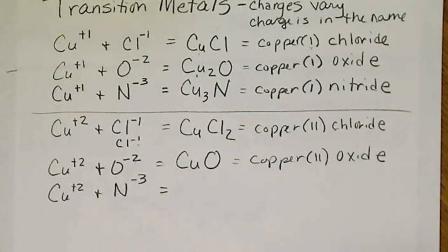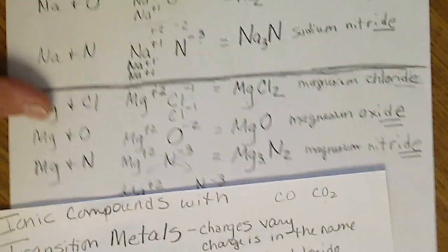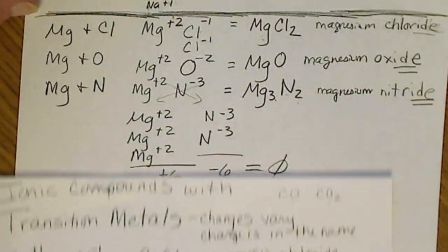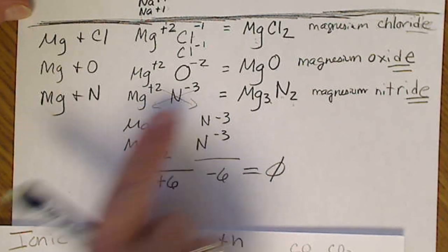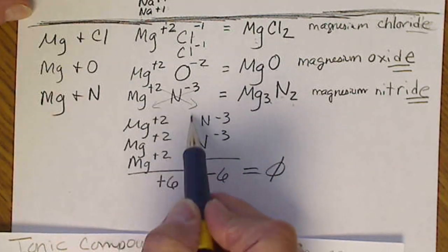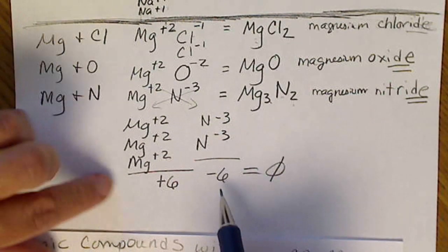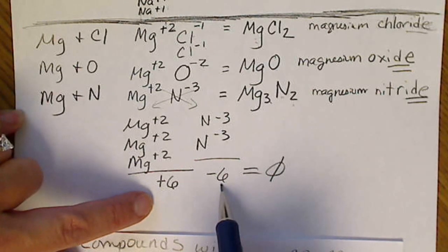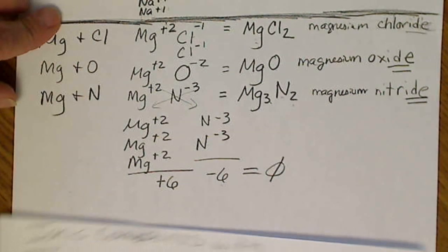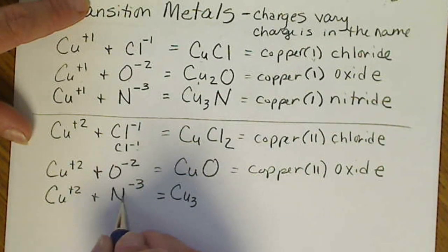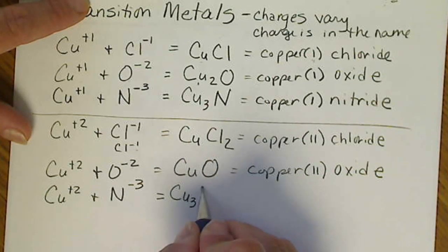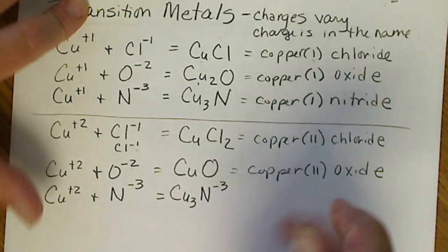And this one is going to be just like the previous slide where we had a magnesium plus 2 and a nitrogen minus 3. We can cross those charges over, or we can come up with the least common multiple, which sounds a little bit mathematical there, but the formula will be the same. It takes 3 copper plus 2s to cancel 2 nitrogen minus 3s.